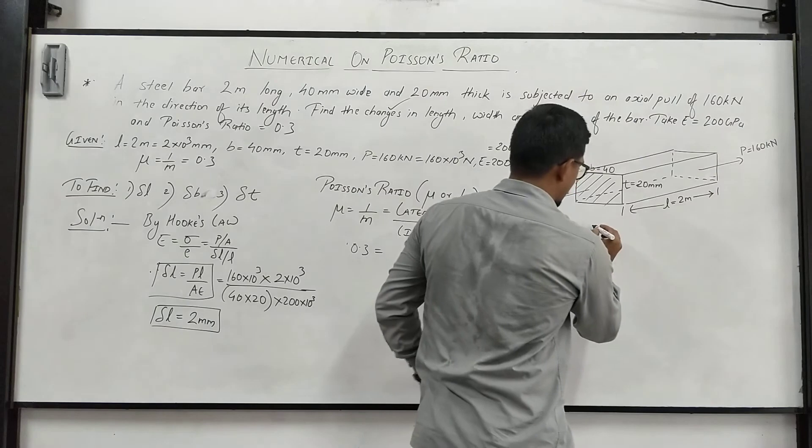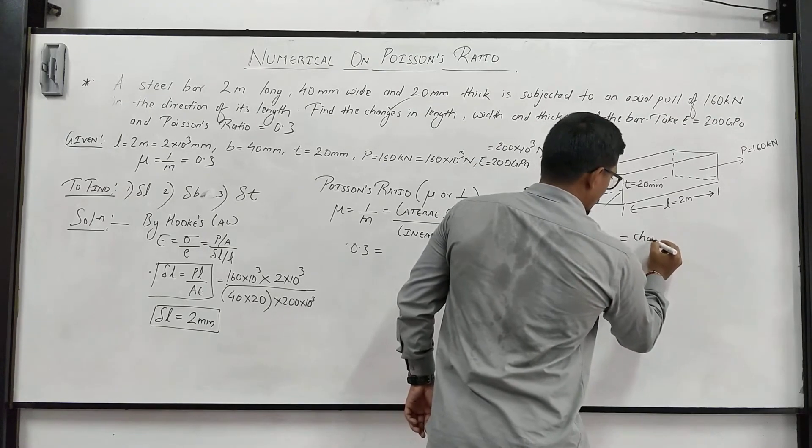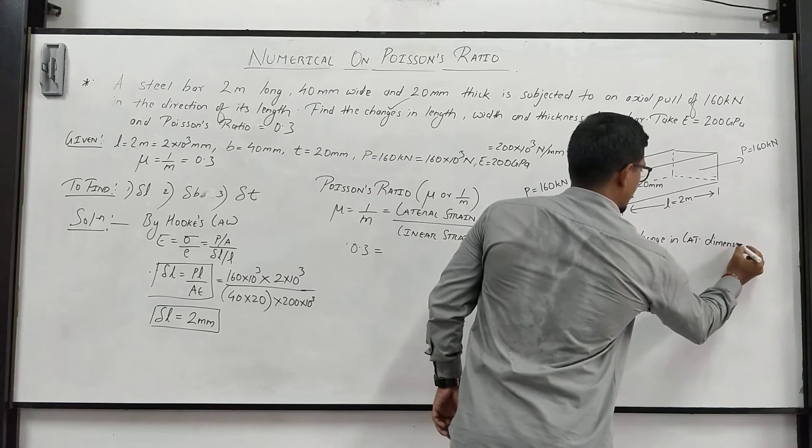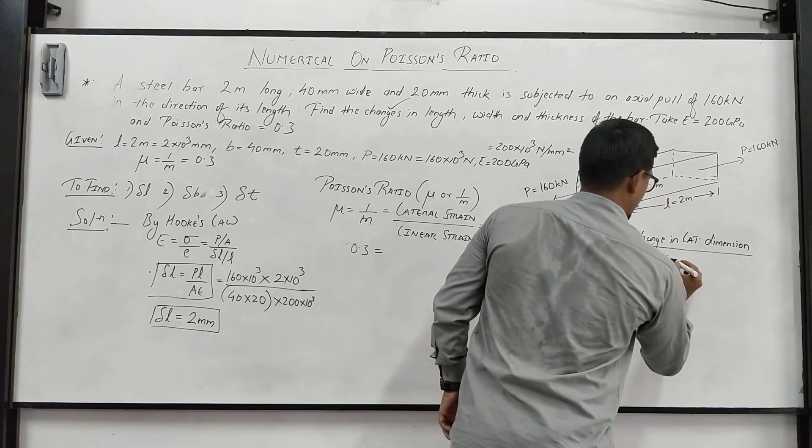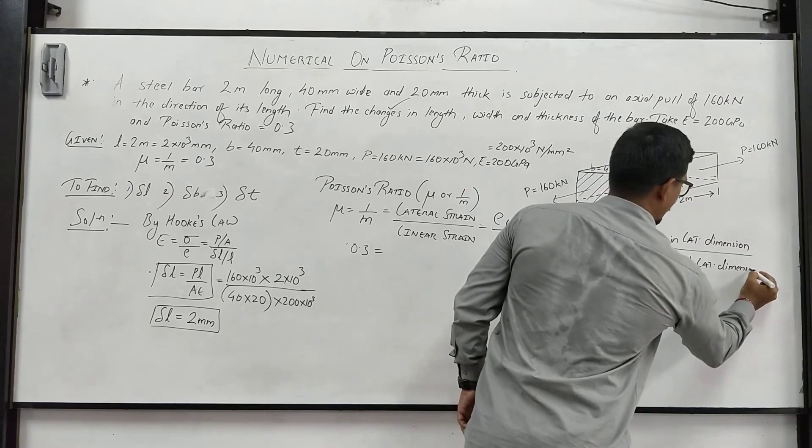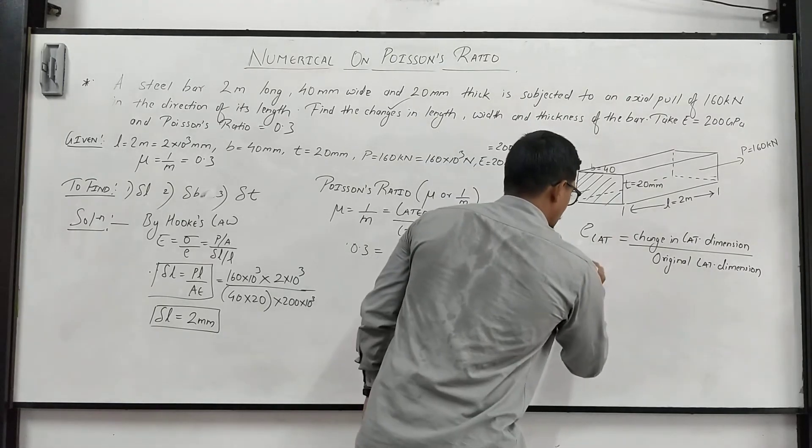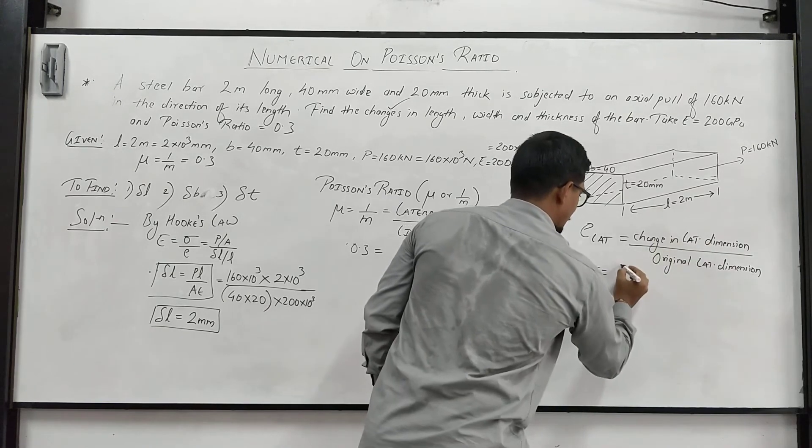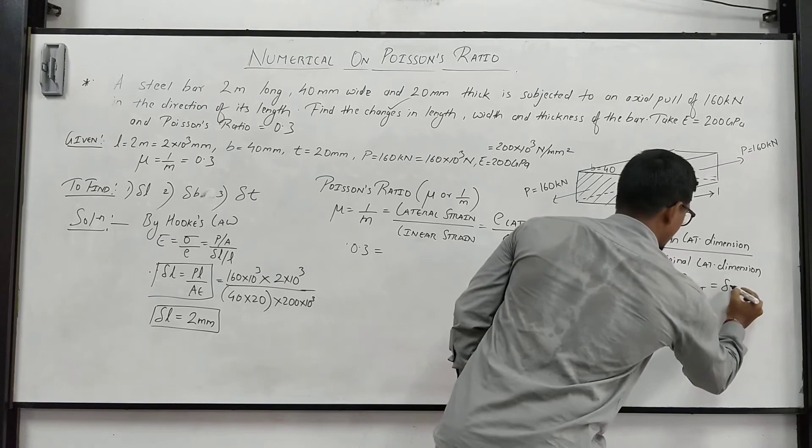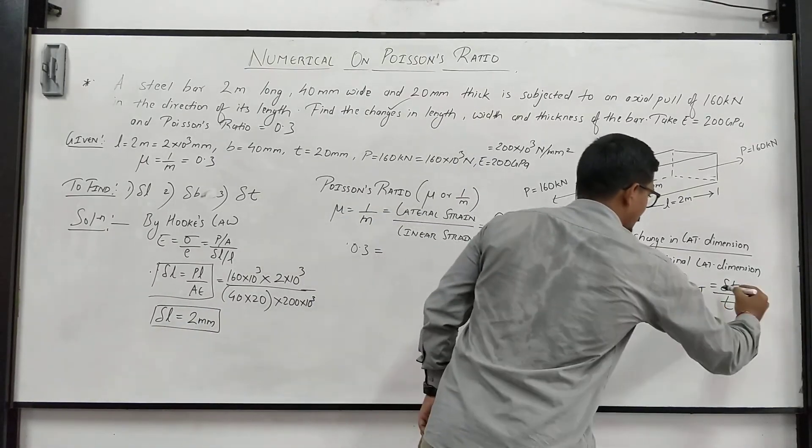So E lat for this case, there will be 2 E lats. Lateral strain can be change in lateral dimension upon original lateral dimension. So this is the basic formula for lateral strain or we can say secondary strains. Lateral strain is also called as secondary strain. E lat can be change in lateral dimension, it can be change in width by original width or it can be change in thickness by original thickness.